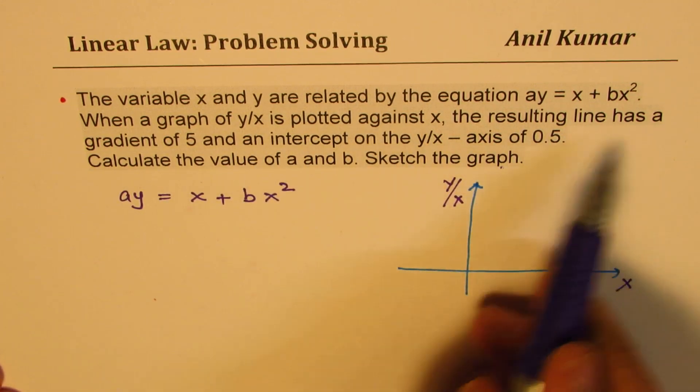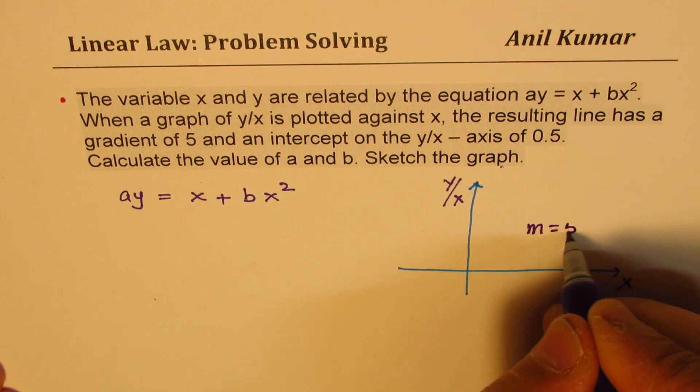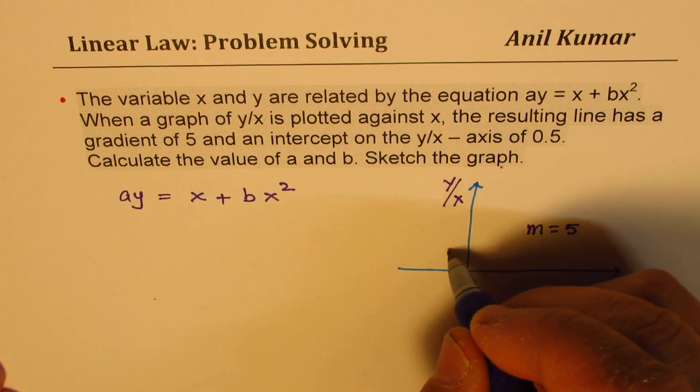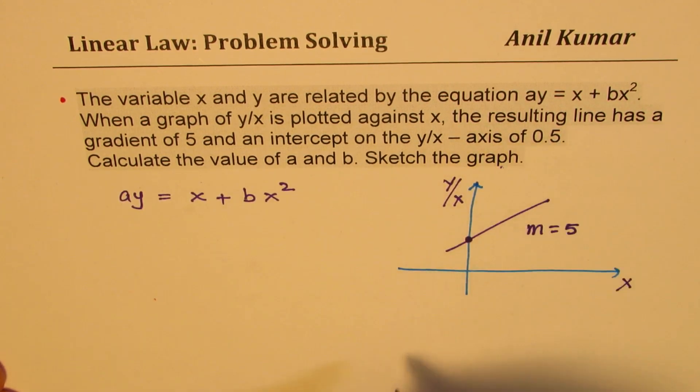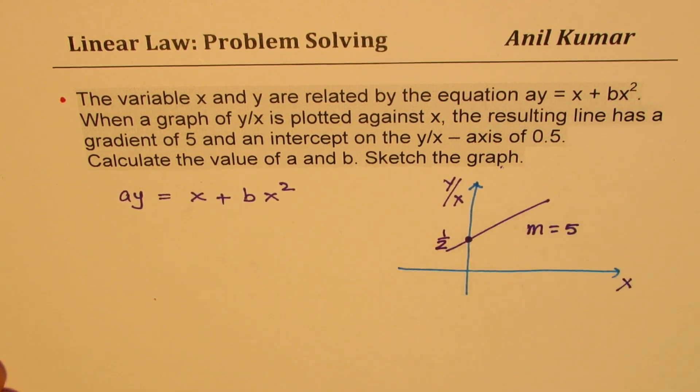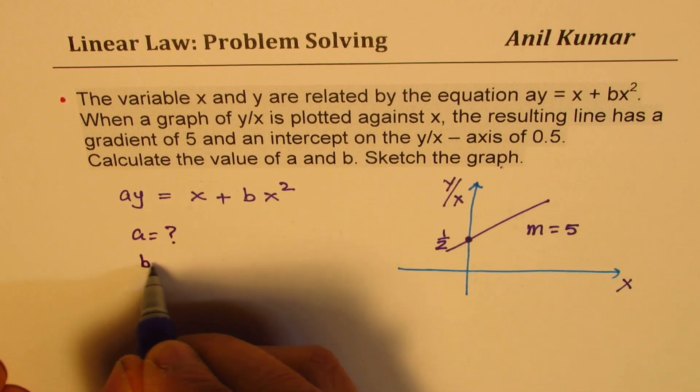The resulting line has a gradient of 5. So, we have m of 5 and intercept on y over x as, so we have something like this with this point here is 0.5. So, this point here is half. That is the situation and you need to find what is a and what is b.